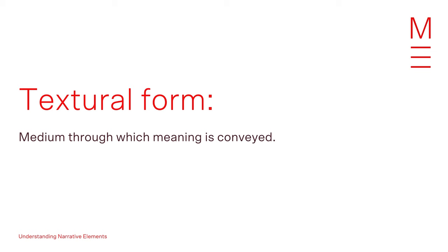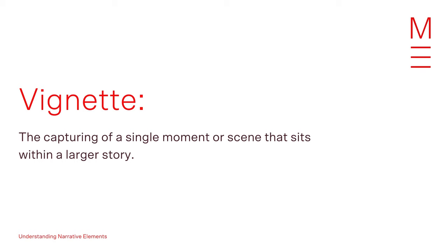Narrative element number three: form. Another consideration that might fit into your decisions around plot is whether you'll experiment with form. When we talk about textual form, the word 'form' comes from a Latin word meaning shape, while 'textual' understands text to mean anything that weaves together or conveys meaning. Textual form therefore refers to the medium through which meaning is conveyed. When it comes to creative writing, this can refer to the structure of your storytelling — asking yourself: in what way am I going to lay out my story? The following are several potential layouts to consider. First: the vignette, which is simply the capturing of a single moment or scene that sits within a larger story.